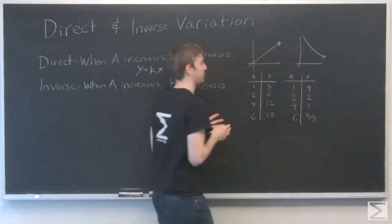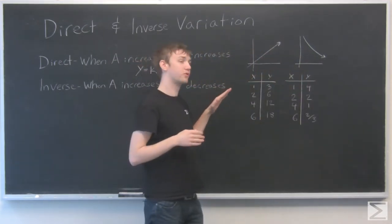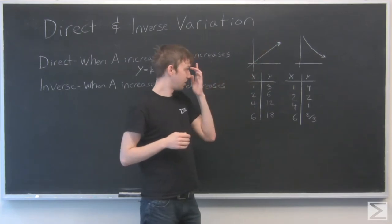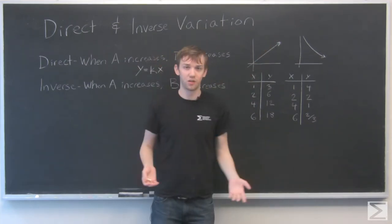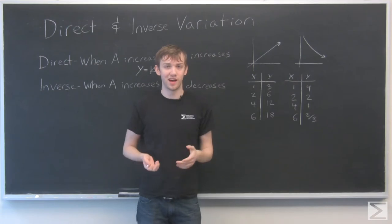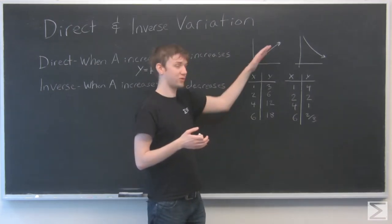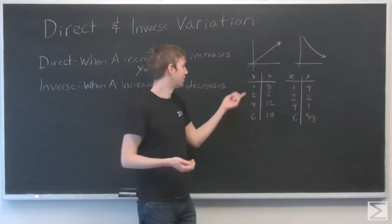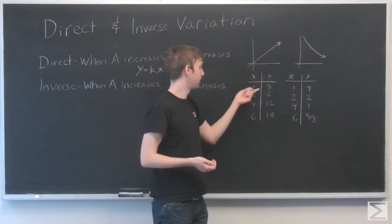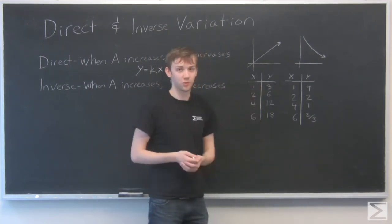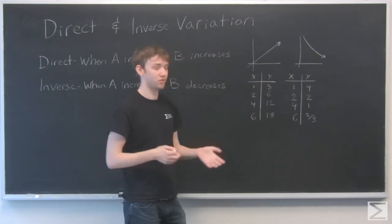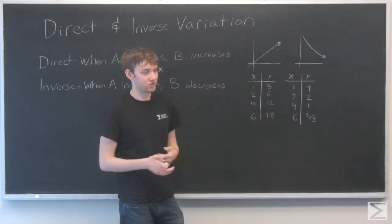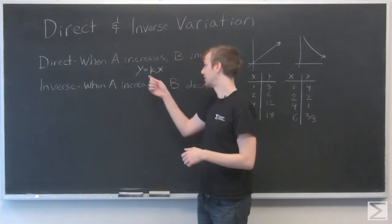So direct variation looks something like this, a graph going in the upwards direction. So depending on what kind of problem you're dealing with, you might have a graph to look at, and if it's going up, then it's direct variation. Or you might be given a table like this, where we can see numbers of X increasing and numbers of Y increasing as well. So both of those are signs that you're dealing with direct variation, and this is the formula that you need to be using.